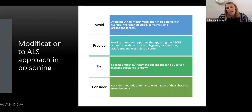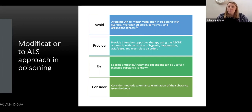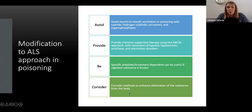Lastly, the ALS approach in poisoning is modified. If you're concerned that somebody has ingested something like cyanide, organophosphates, or corrosives that could be dangerous to you, avoid doing mouth-to-mouth. Follow your ABCDE approach, try to work out what they've taken, and if there are specific antidotes, use them. Consider methods to eliminate the substance from the body. The key thing: avoid mouth-to-mouth if the substance could be harmful to you.